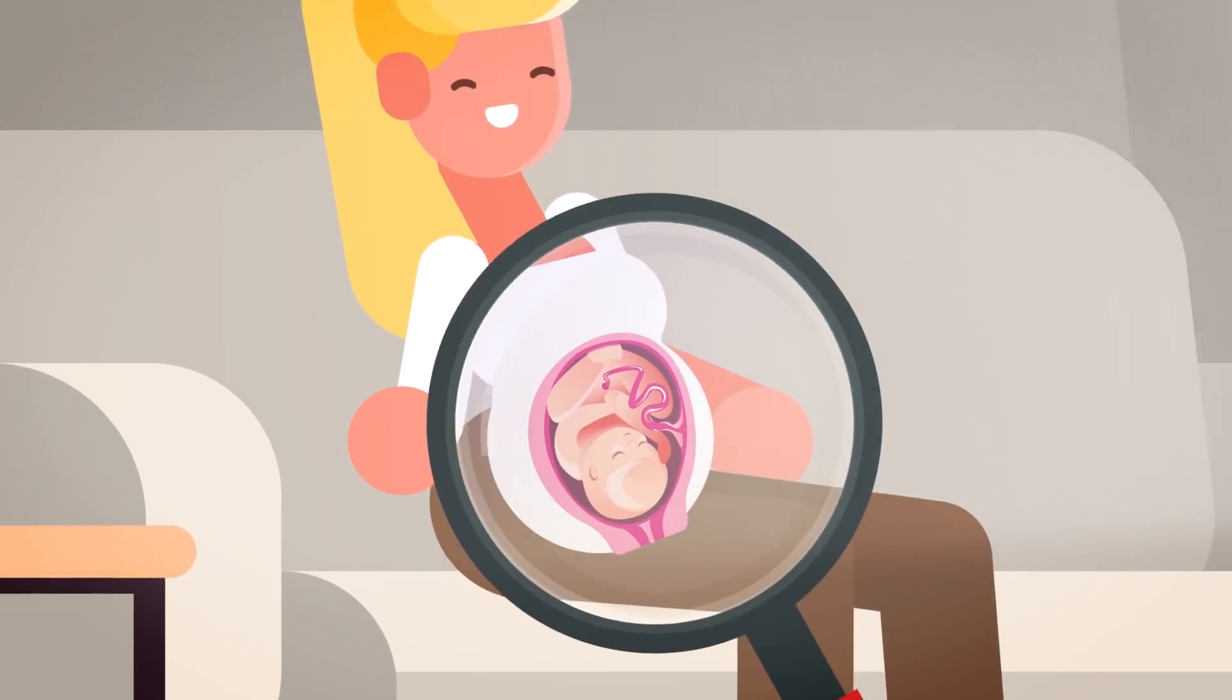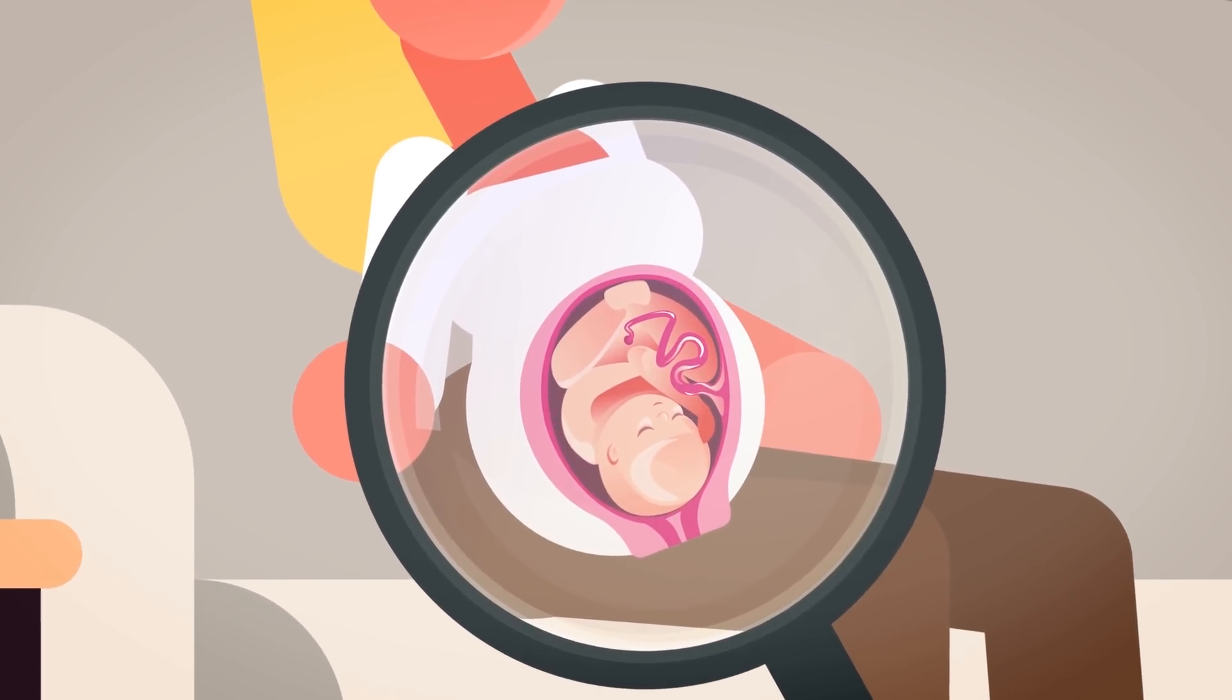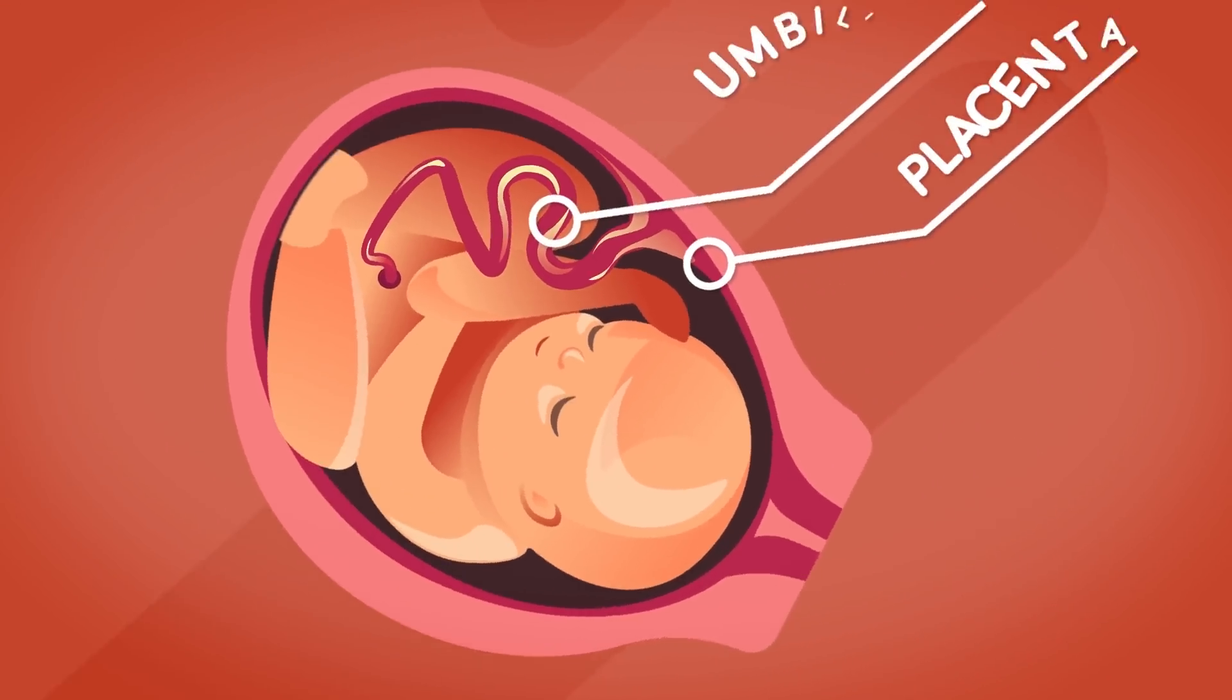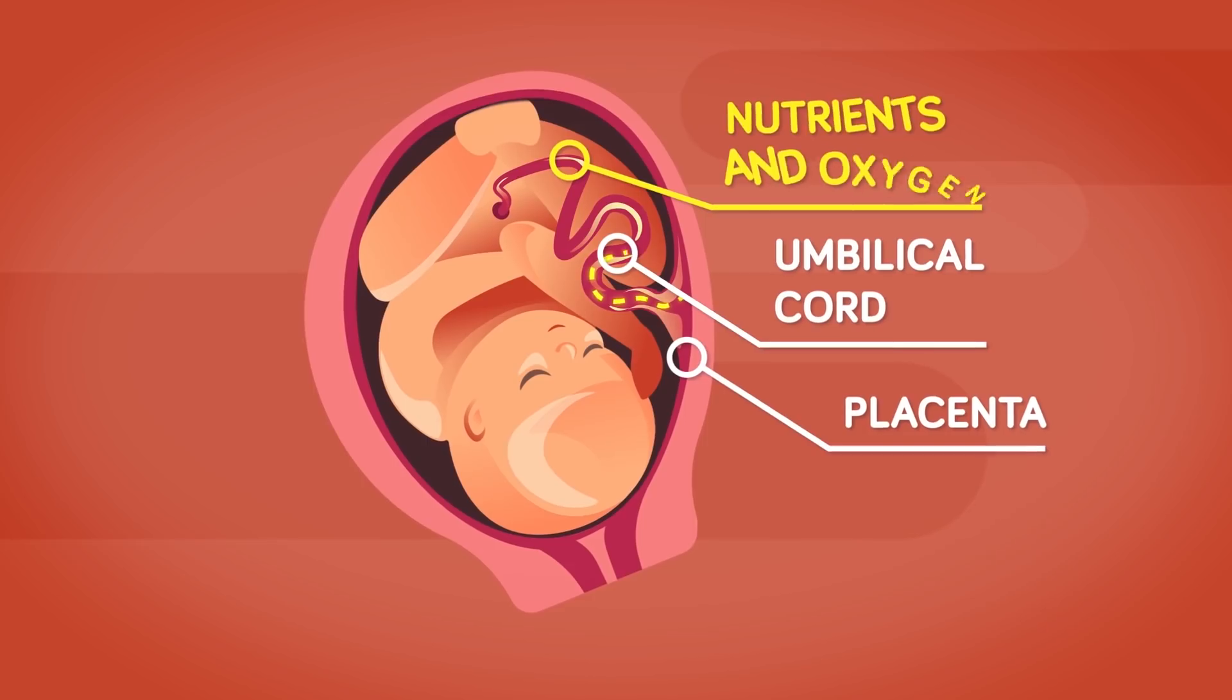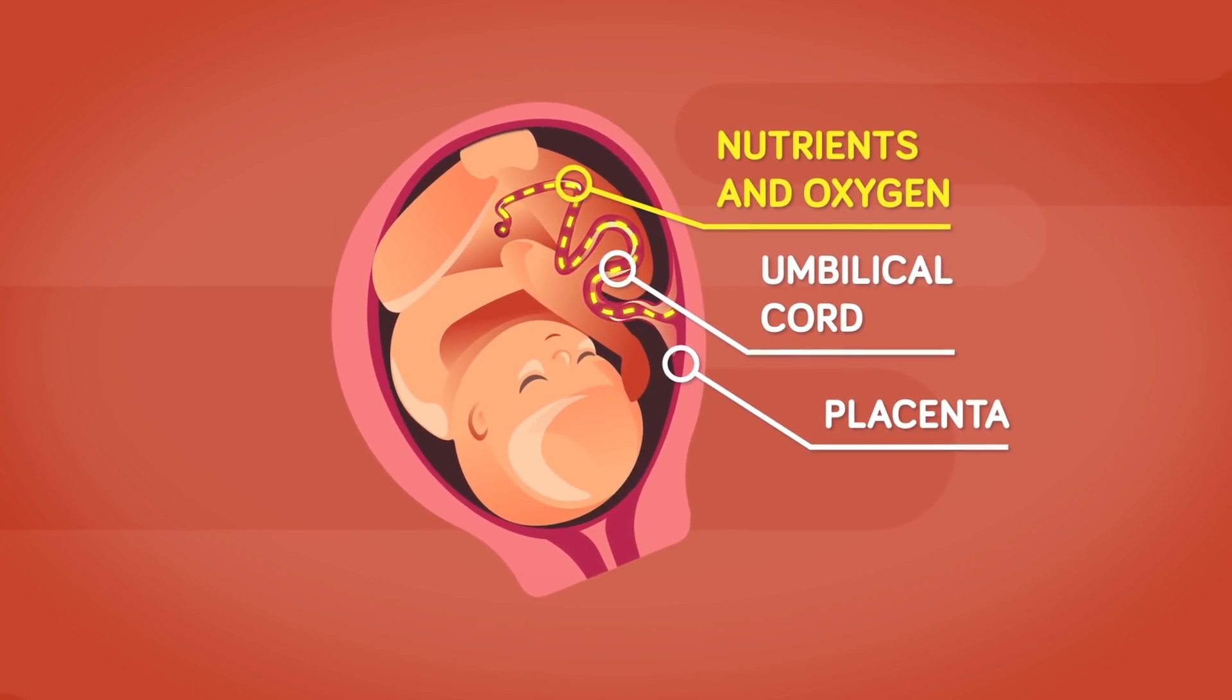To survive, the baby needs to get all these things directly from the mother. The baby is connected to the mother's placenta by the umbilical cord, and all of the nutrients and oxygen that the baby needs to survive travel from mother to baby through the umbilical cord.